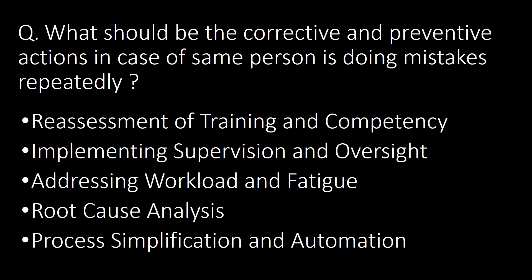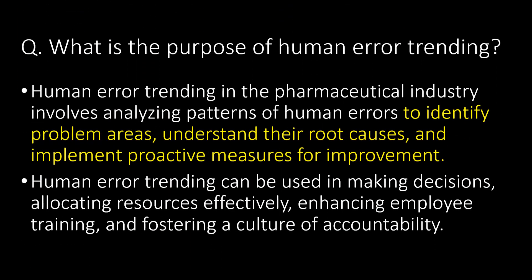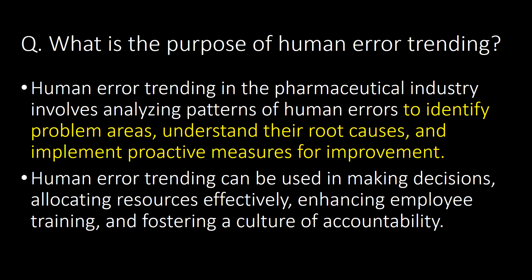What should be the corrective and preventive actions when the same person is making mistakes repeatedly? We can identify and implement the following CAPAs: first, reassessment of training and competency; second, implementing supervision and oversight; third, addressing workload and fatigue; fourth, root cause analysis; and fifth, process simplification and automation.